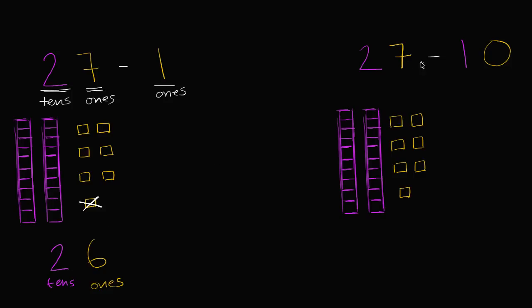Now let's think about 27 minus 10. Once again, this is 27, two tens and seven ones. Now we're not going to take away any ones, but we're going to take away one 10. Let's remind ourselves - a 10 is literally one 10.